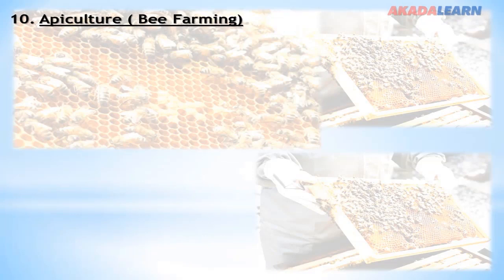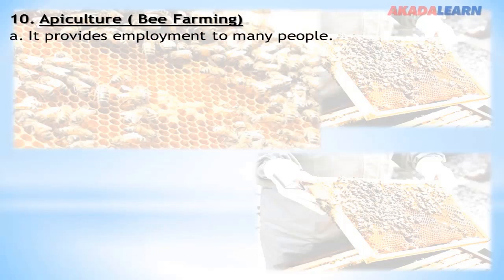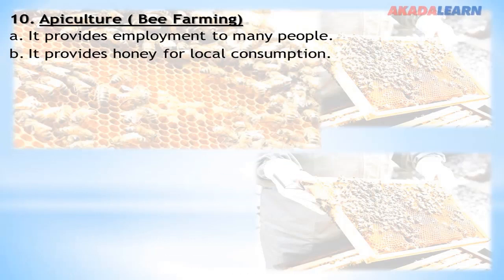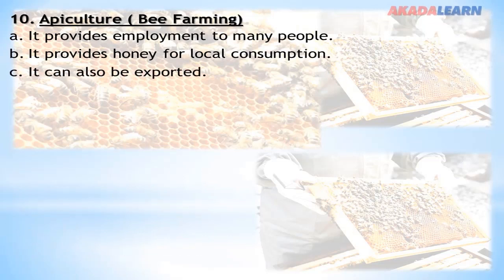Apiculture: Apiculture is a branch of agriculture that deals with bee farming — the rearing of bees. Apiculture provides employment to many people. It provides honey for local consumption and can also be exported, which aids foreign exchange. Honey obtained from this farming can be used for many industrial purposes, such as the production of candles and cosmetics.